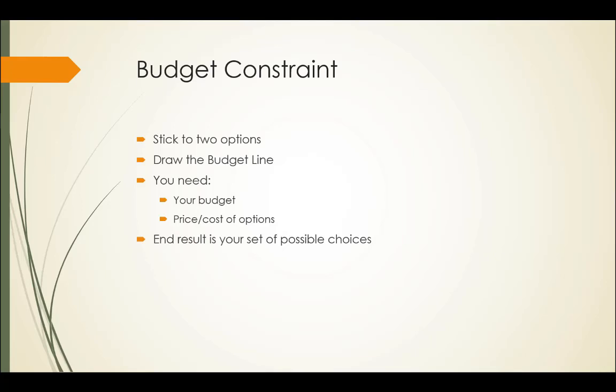We're going to stick with two options. We're going to draw the budget line or the budget constraint line for that. You're going to need to know what your budget is, and that's not your total budget for your whole household or whatever you spend a month. It may just be the budget difference between the two options.